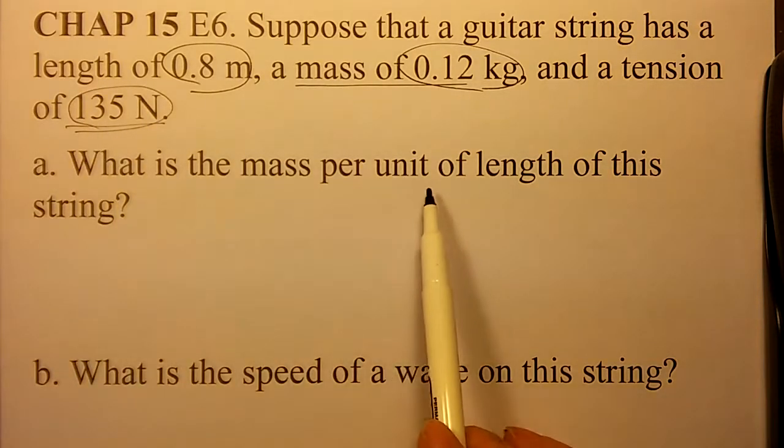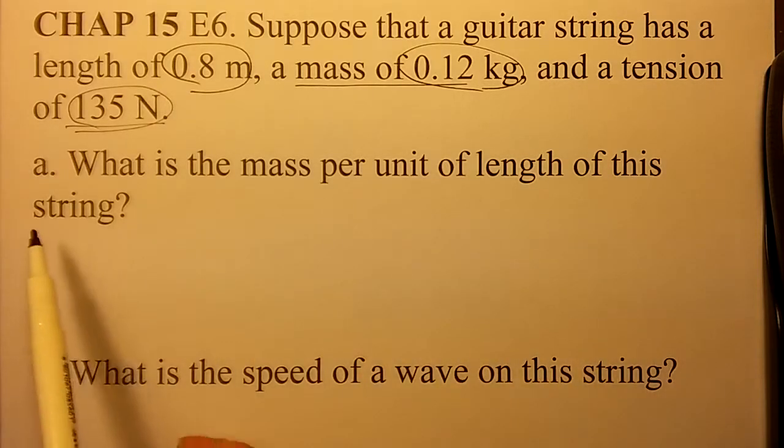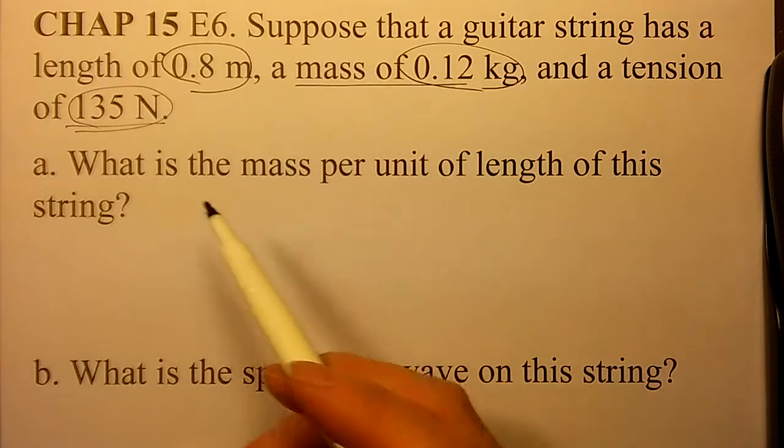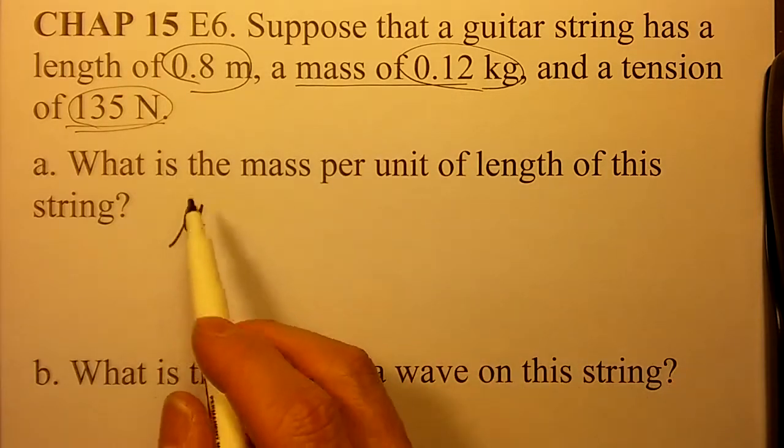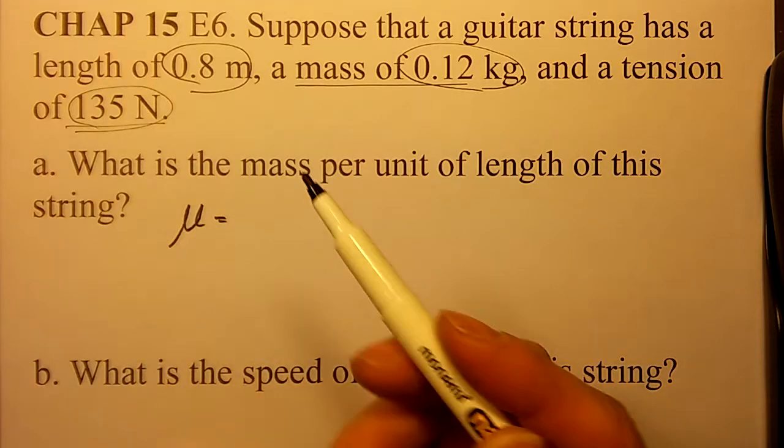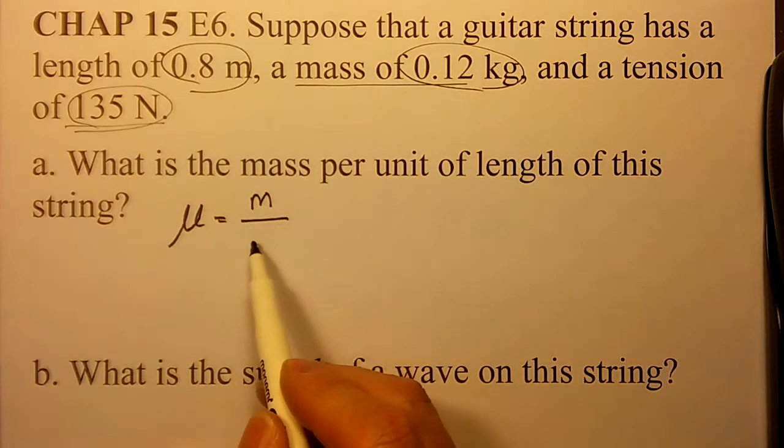What is the mass per unit of length of this string? We call it mu as the density, the string linear density. So, it's the mass over the length.